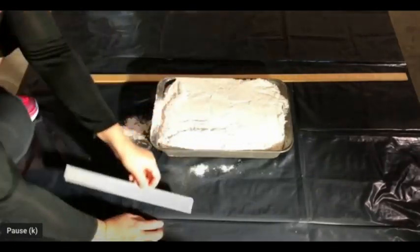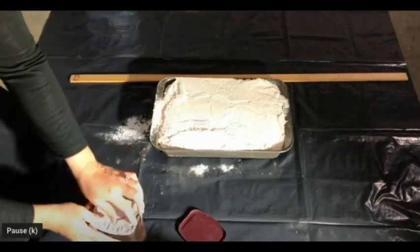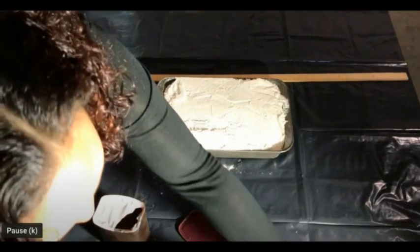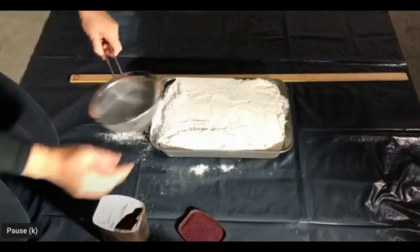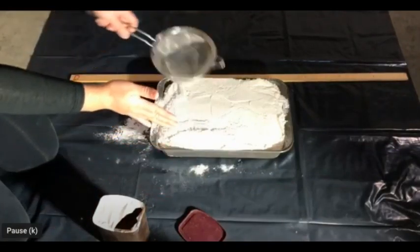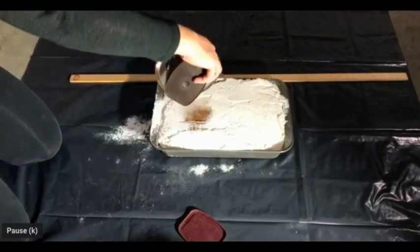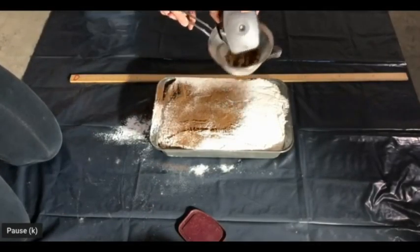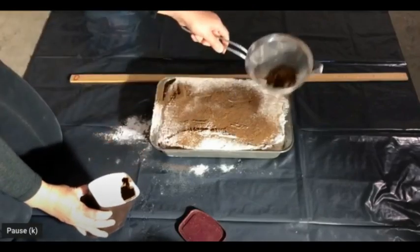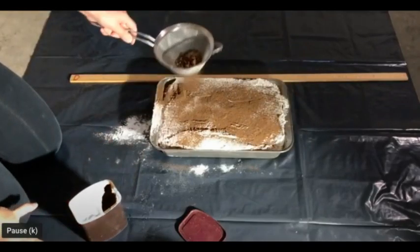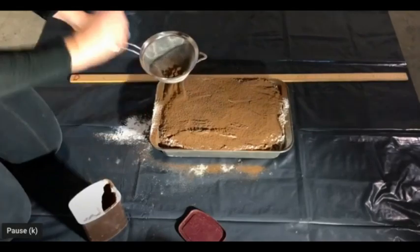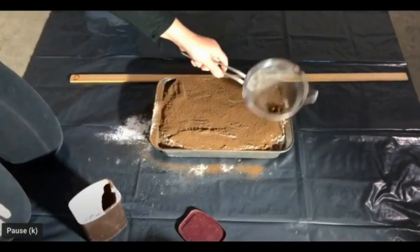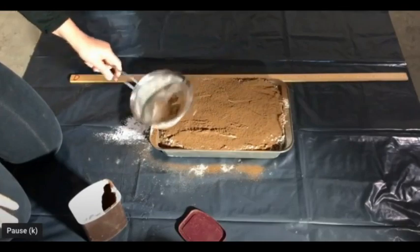So after you have done that, you are going to add a very thin layer of cocoa powder, and I used a strainer right here to evenly distribute the cocoa powder on the surface of the flour which now becomes our ground. So this is important because it will allow us to see the impact crater in detail.